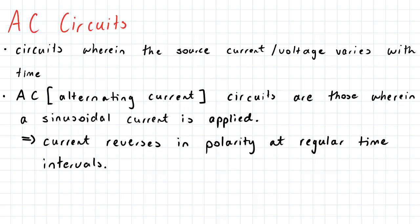When we're talking about circuits, there are certain circuits wherein the source current or voltage varies with time. When we refer to AC circuits, or alternating current circuits, these are the kinds of circuits where a sinusoidal current is applied. So the source current and voltage varies as per a sinusoid, as per a cosine function or a sine function.